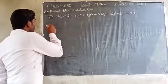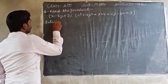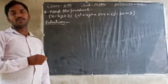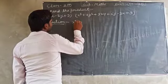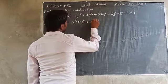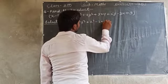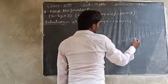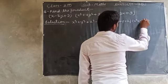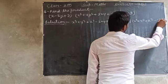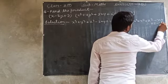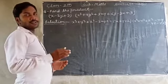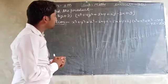Let us solve the question. There is a formula: x³ + y³ + z³ − 3xyz = (x + y + z)(x² + y² + z² − xy − yz − zx). This is the formula we will use to solve the question.